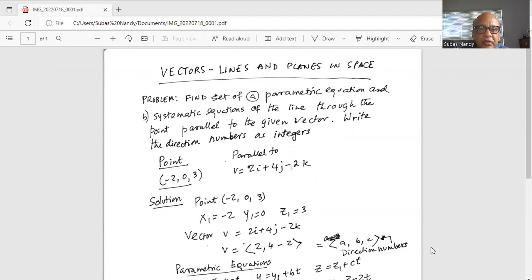So the point is (-2, 0, 3) and the line we are required to find out is parallel to the vector 2i + 4j - 2k. So the x coordinate x1 is -2, y coordinate y1 is 0, and the z coordinate z1 is 3. Vector v given is 2i + 4j - 2k. Hence the directional numbers of the vector are 2, 4, and -2.